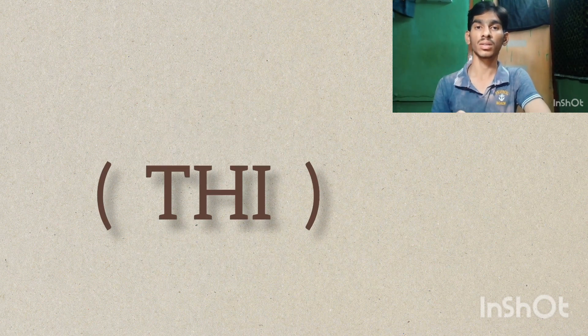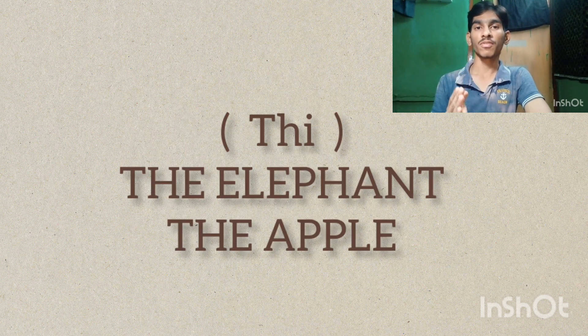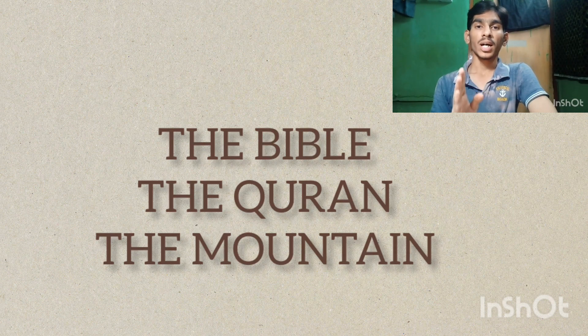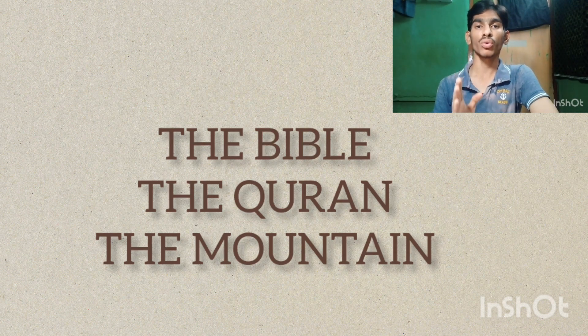For example: 'the elephant,' 'the apple.' Otherwise, for words beginning with a consonant, you should say 'thuh' — for example: 'the Bible,' 'the Quran,' 'the mountain.'